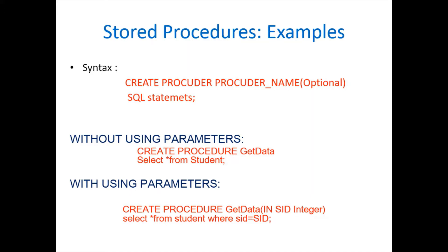Example: CREATE PROCEDURE with procedure name 'get_data' and the SQL statement SELECT * FROM student. This procedure is going to return all the attributes available in the student table. The second example is with a parameter, using an IN parameter.